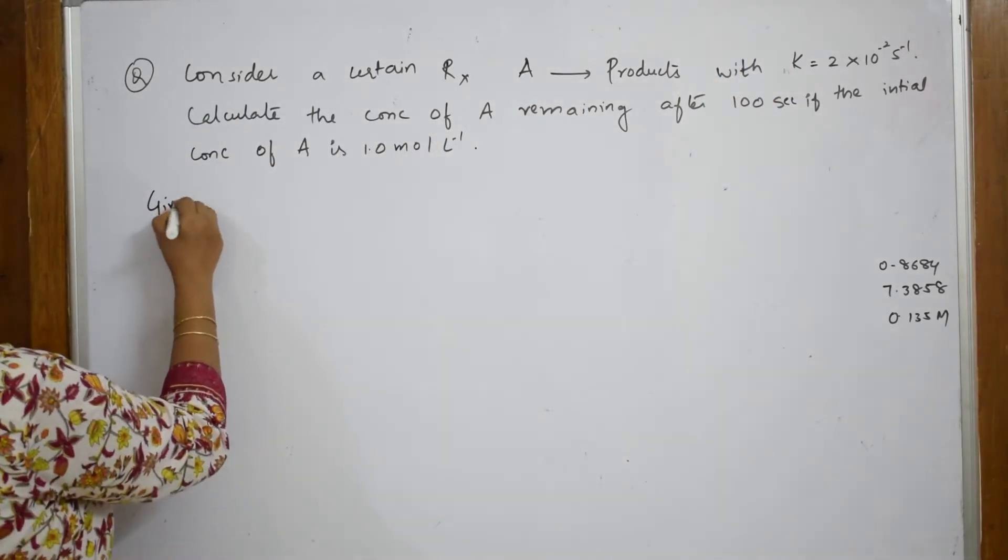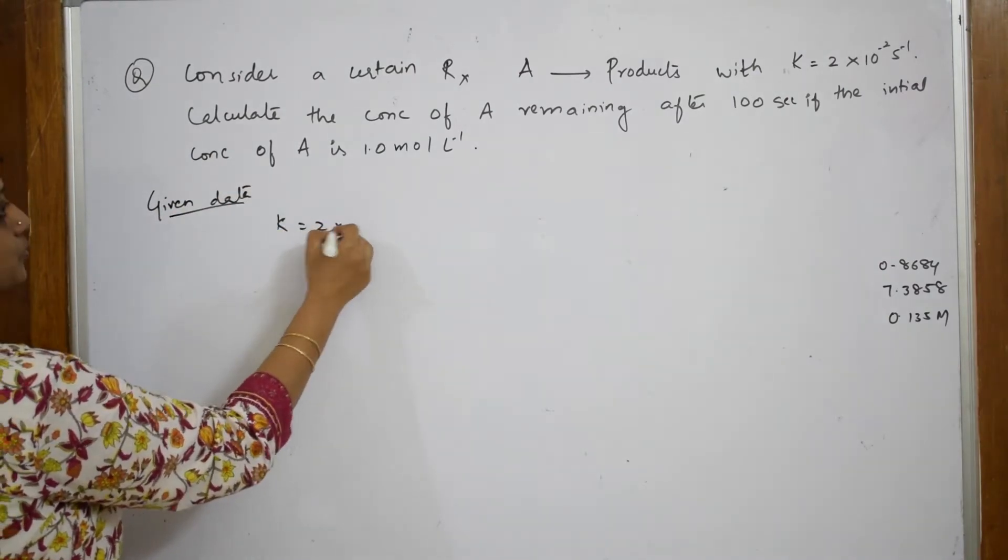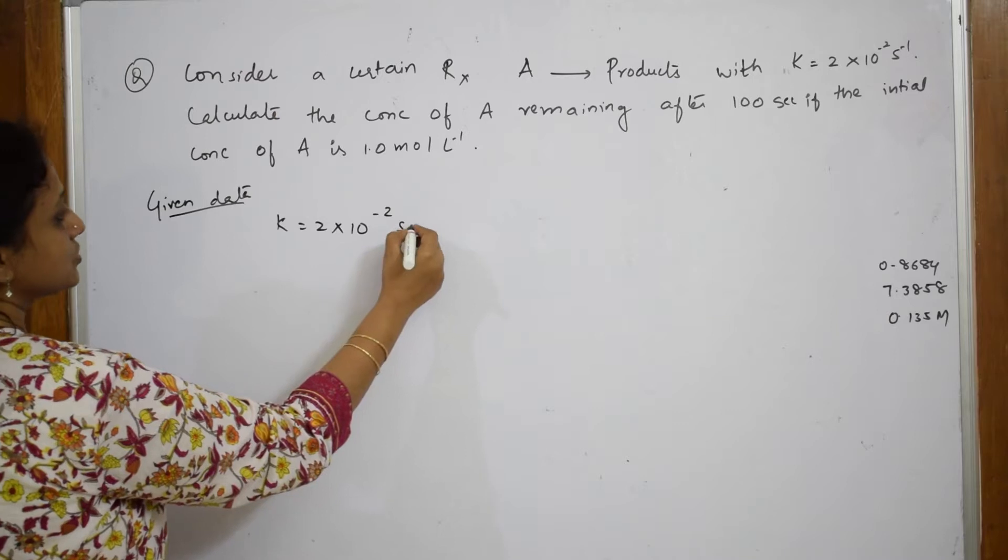Let us write the given data. K is equal to 2.2 into 10 raised to minus 2 second inverse.